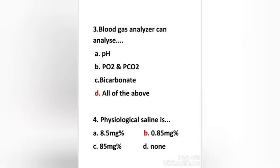Next question: Blood gas analyzer can analyze: pH, PO2, PCO2, bicarbonate, all of the above. Right answer is option D: all of the above. Next question: Physiological saline is 8.5 mg%, 0.85 mg%, 85 mg%, none. Right answer is option B: 0.85 mg%.